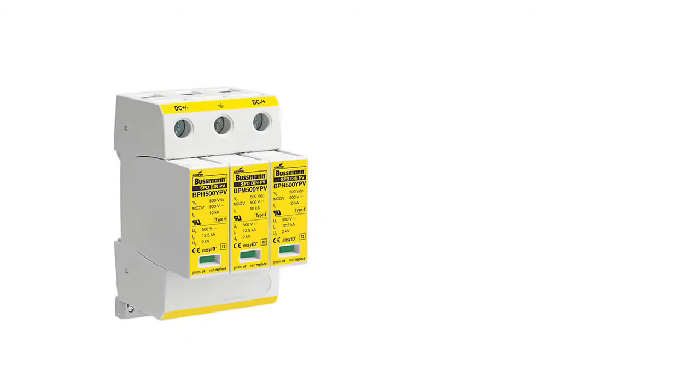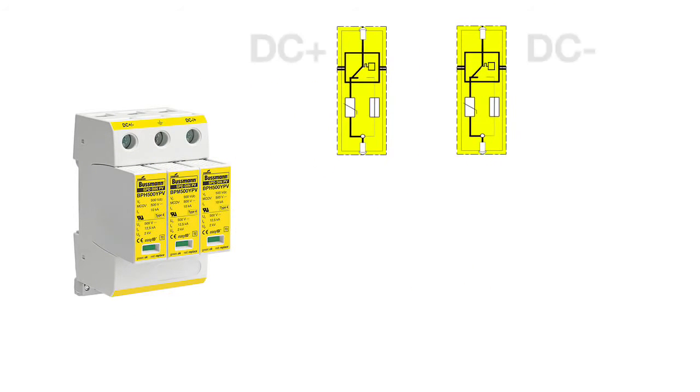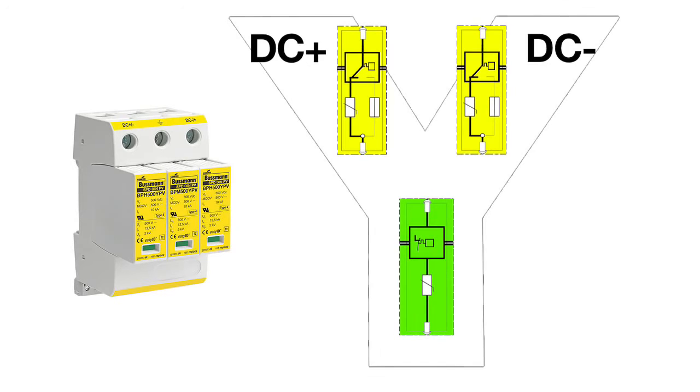The Busman PV module fits well into wiring systems often referred to as Y configuration. This setup is the most common system for the photovoltaic industry. The Y configuration offers a series connected approach to provide DC voltage protection in PV systems.